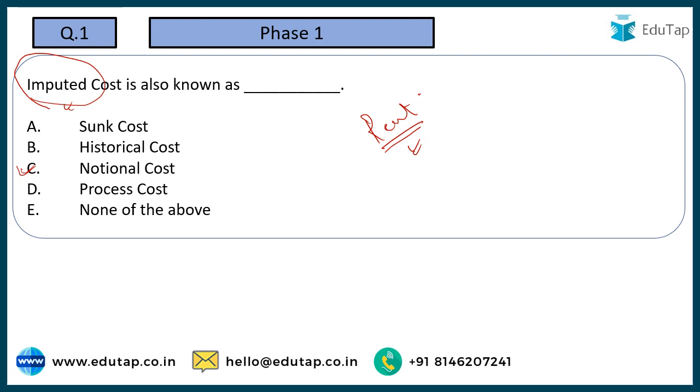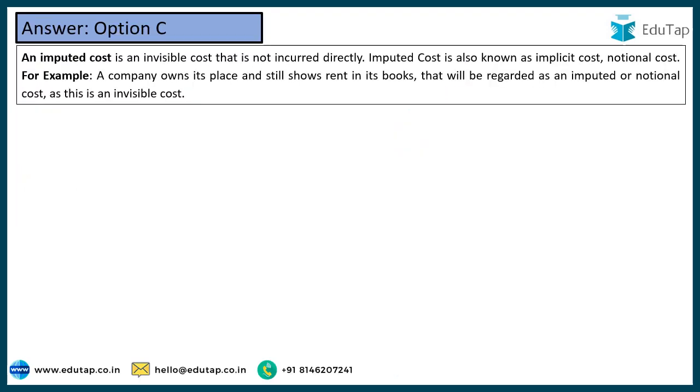So option number C — notional cost — would be the correct answer. Imputed cost is also known as notional cost.